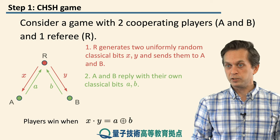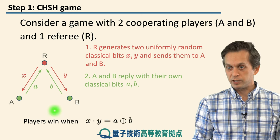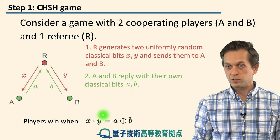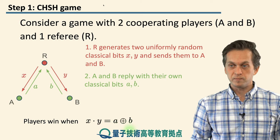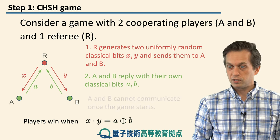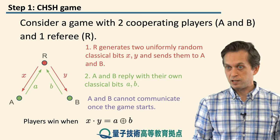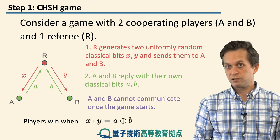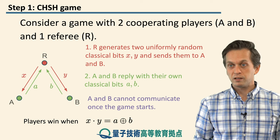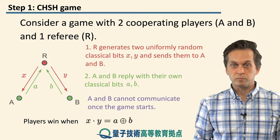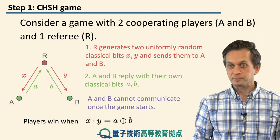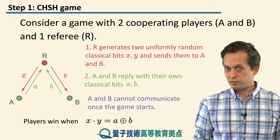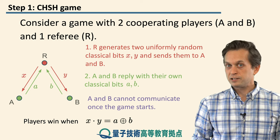They win one round if the product X·Y is equal to the binary sum of bits A and B. There is one very important constraint: once the game begins, players A and B are not allowed to communicate. If they could communicate, A could just tell B what bit X they received, and they could easily win every round. But before the game begins, they can decide on their strategy — what bits and in what fashion they will output.